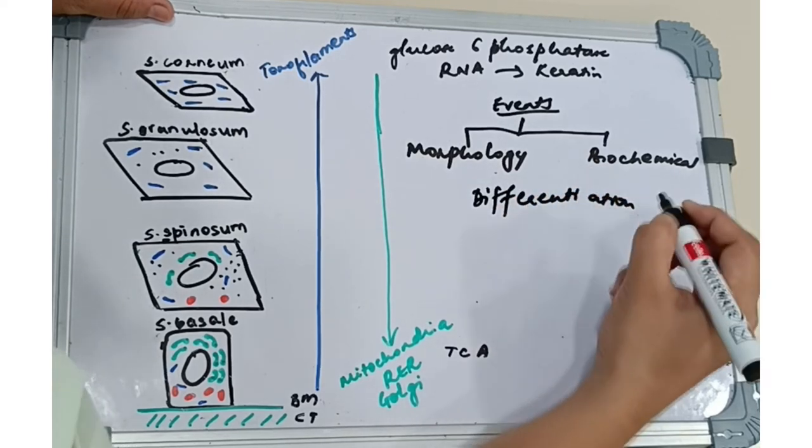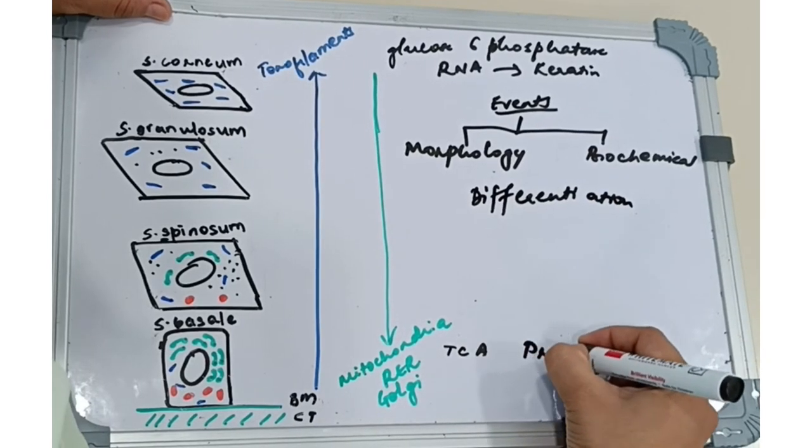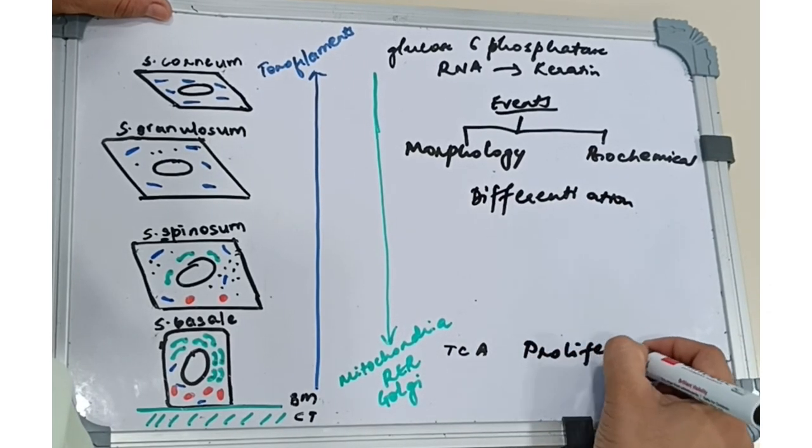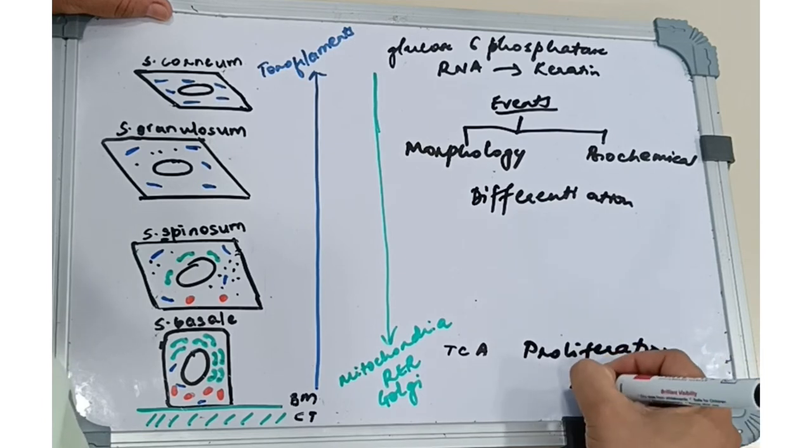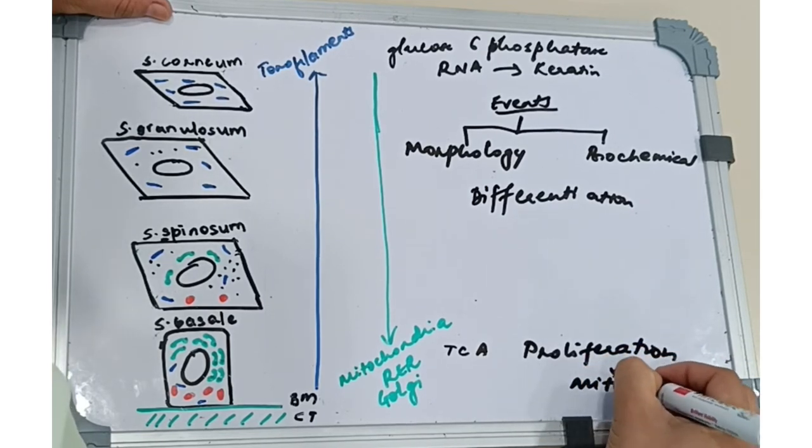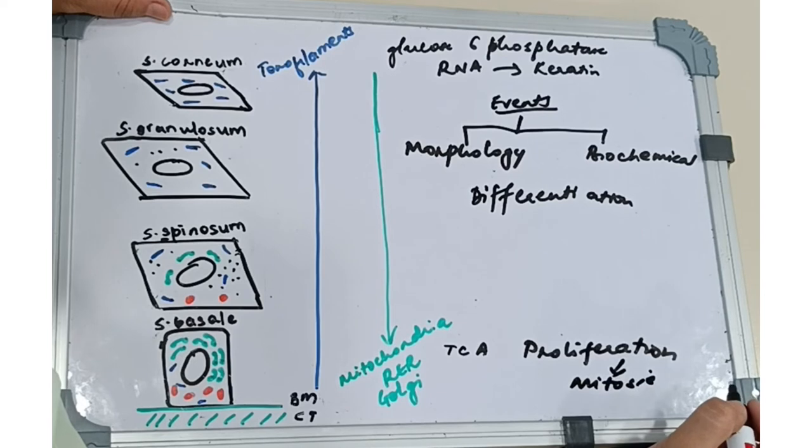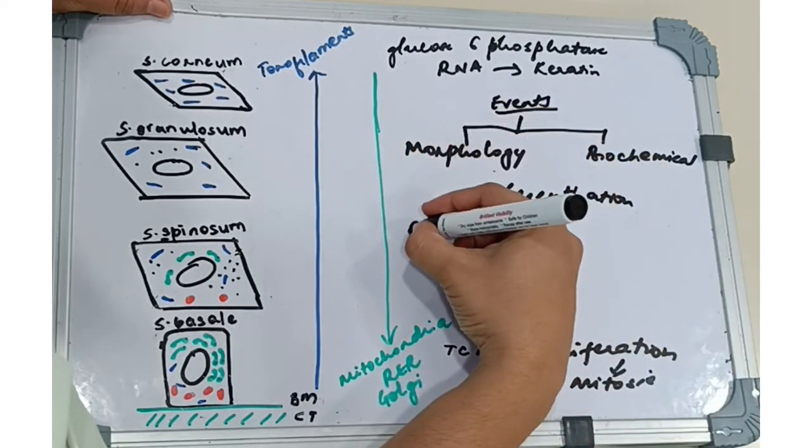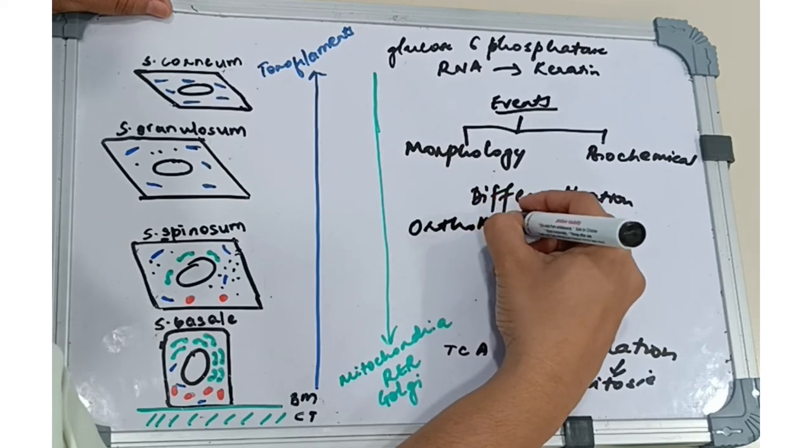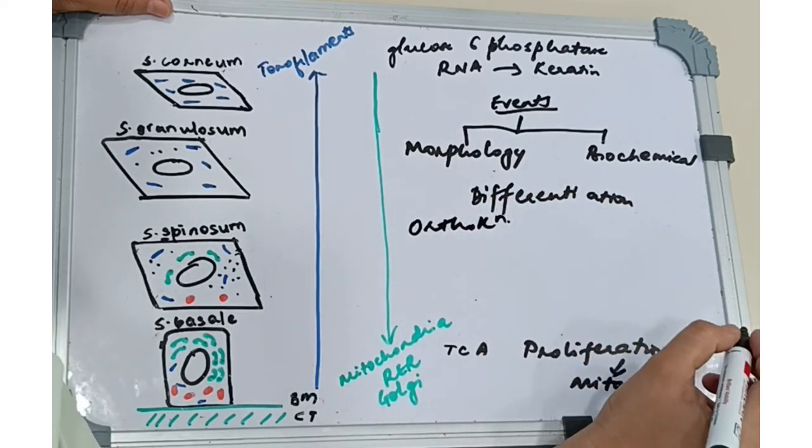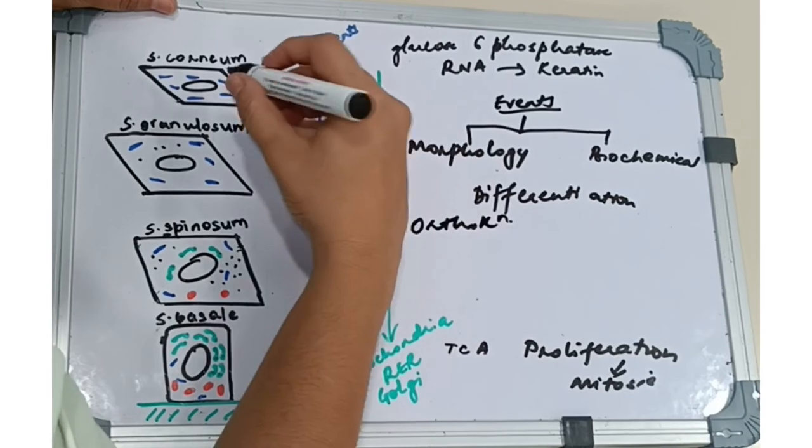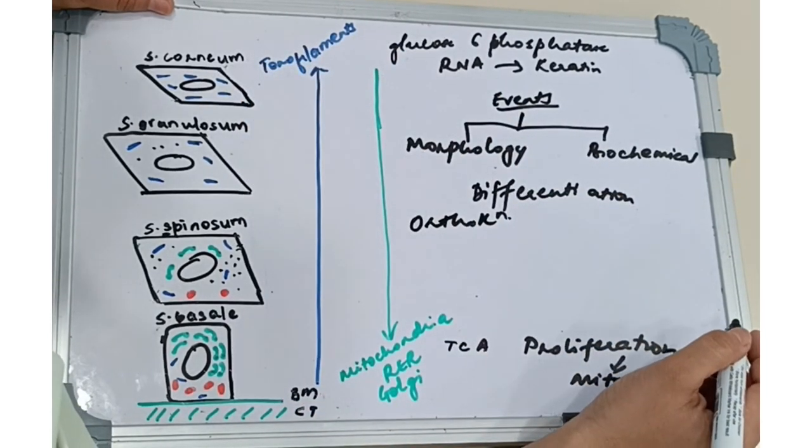If keratinization is complete, we have a superficial cornified layer with no nuclei in the stratum corneum and a well-defined granulosum. That is called orthokeratinized layer. Whereas in case of parakeratinization, the stratum corneum shows pyknotic nuclei and the keratohyaline granules are dispersed.